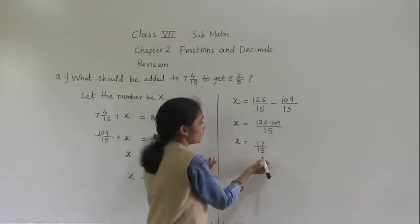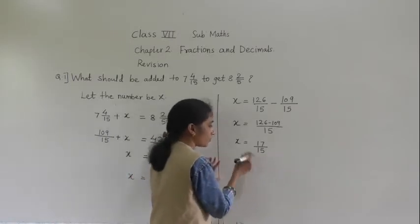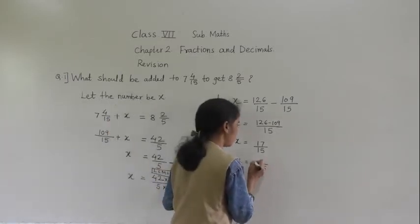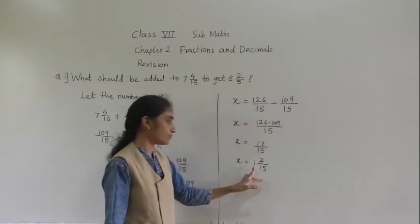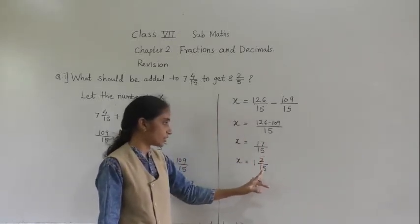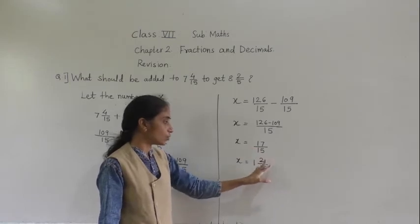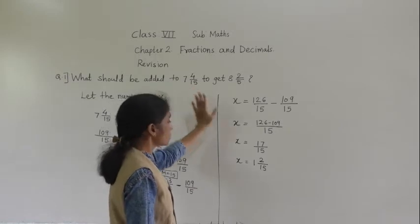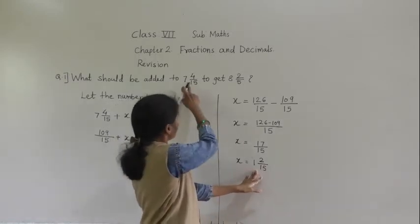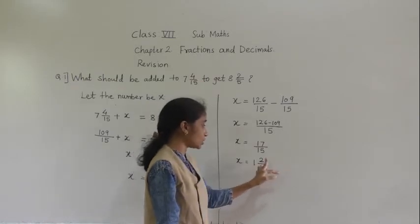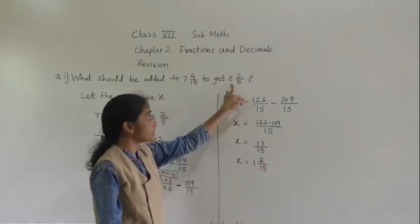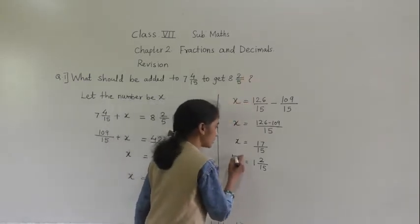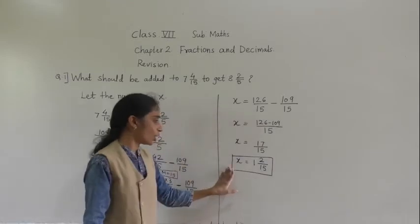We got the answer 17 upon 15. Now this is an improper fraction, we can convert to mixed fraction: 15 ones are 15, 15 plus 2 is 17, so 1 integer 2 upon 15. The number we should add to 7 integer 4 upon 15 is 1 integer 2 upon 15, and we will get 8 integer 2 upon 5.